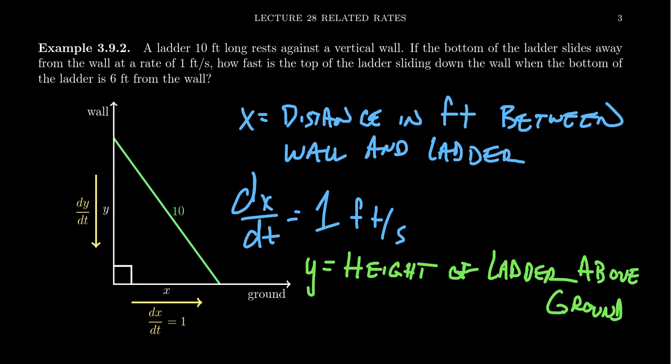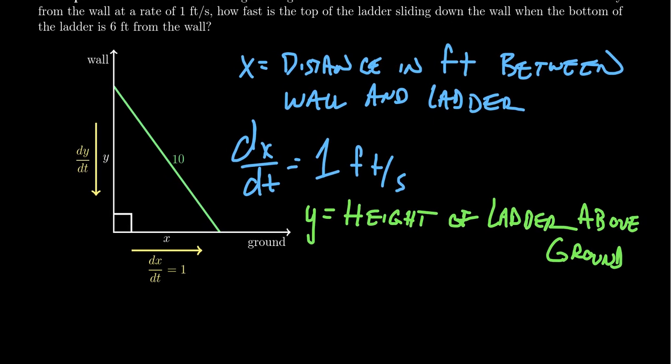X measures a horizontal distance and Y measures a vertical distance, which is why I use X and Y — it coincides with our usual notions of geometry. When you see words like 'how fast,' that makes you think of speed, which makes you think of velocity. Velocity is the derivative of the position function, so we're asking about a rate of change — a derivative. How fast is the top of the ladder sliding down when the bottom is six feet from the wall?